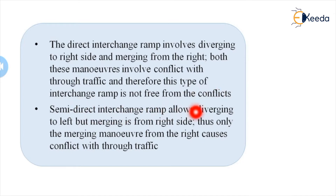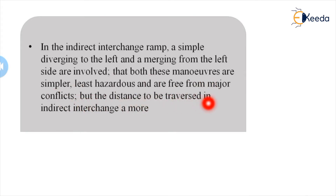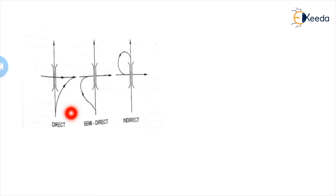The semi-direct interchanging ramp allows diverging to the left but merging from the right side. Thus only the merging maneuver from the right causes conflict with the through traffic. In the indirect interchanging ramp, a simple diversion to the left and merging from the left are involved. Both these maneuvers are simpler, least hazardous, and free from major conflicts, though the distance to be traversed in indirect interchange is more.